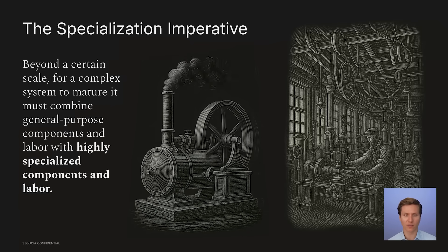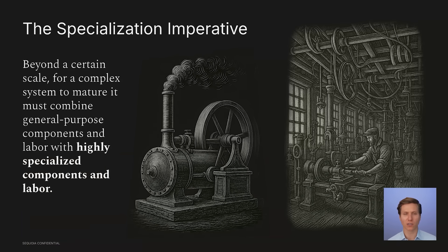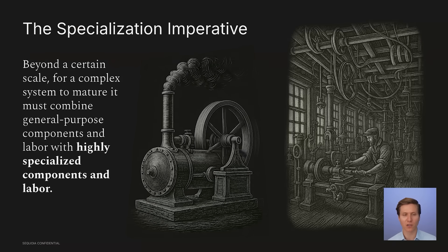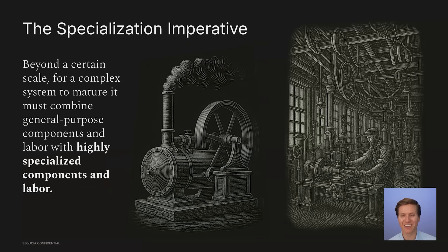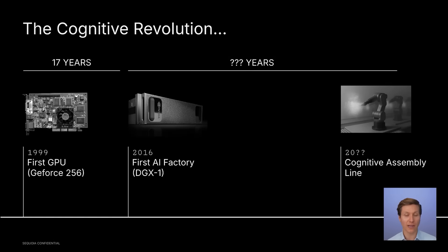We believe the reason why it took so long is the specialization imperative. Beyond a certain scale, for a complex system to mature, it must combine general purpose components and labor with highly specialized components and labor. In other words, what was happening is taking these general technologies and specializing them to produce specific outputs.